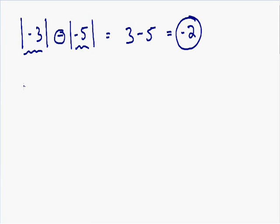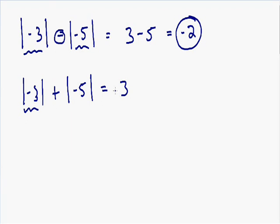Let's say we had the absolute value of negative 3 plus the absolute value of negative 5. Starting with negative 3, the absolute value is always positive, so that is going to be positive 3. The positive sign is outside of the absolute value, so it just stays the same. The absolute value of negative 5 is just 5. So we have 3 plus 5, which is equal to 8.